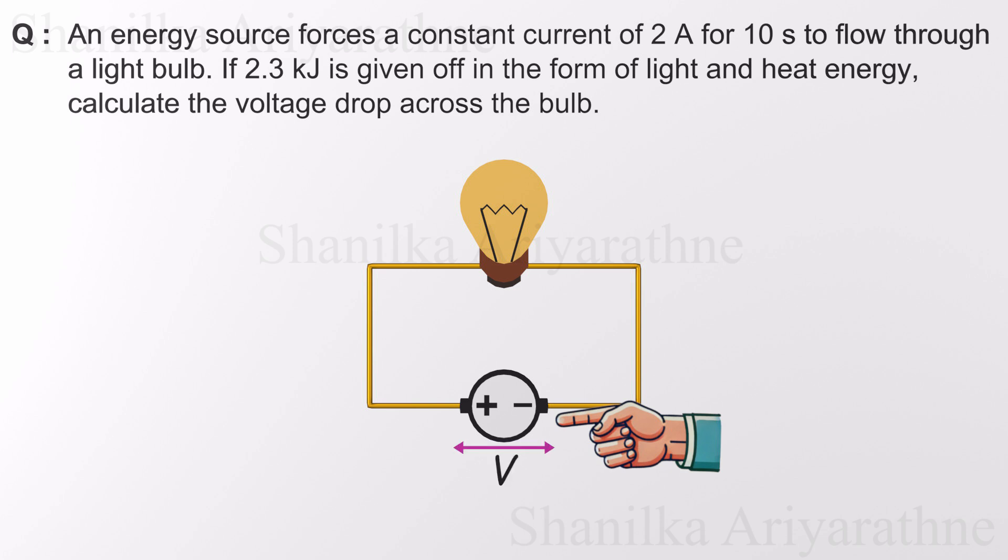And because there are no other components in the circuit, no resistors, no other loads, that voltage V is applied entirely across the light bulb. That's what we're trying to figure out. We're also told that the energy source drives a constant current of 2 amperes through the circuit. Let's label that as well.